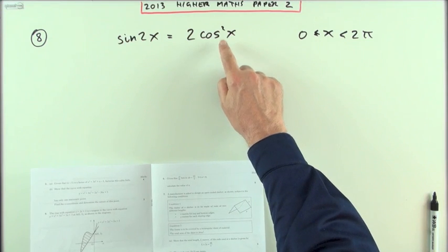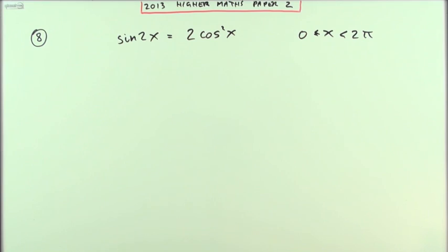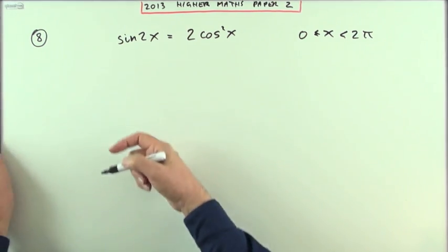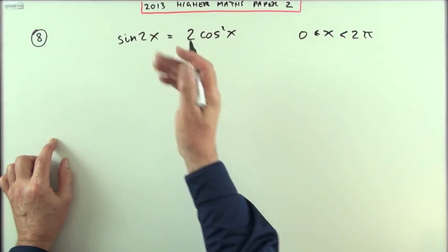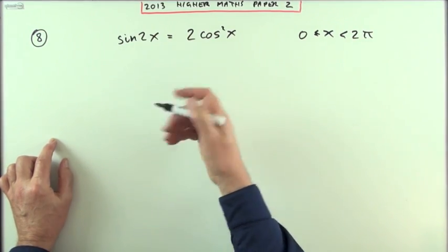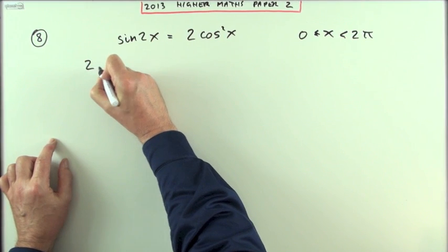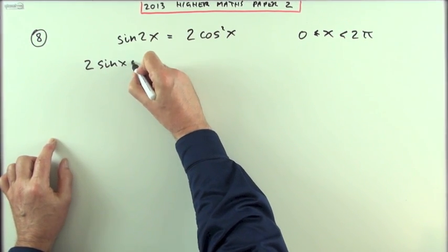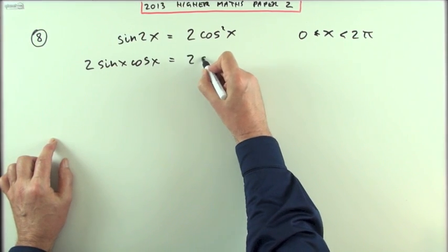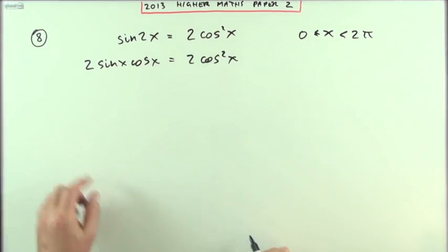But this cos squared x is a bit of a spanner in the works. I've only got one choice. I have to make the x's the same. So it's this double x that's going to change to a single x. I check up the front for that, there's only one form. It has to be 2 sin x cos x, and that side becomes 2 cos squared x.